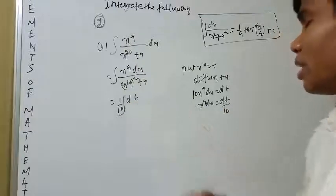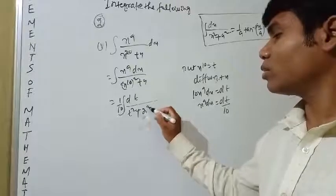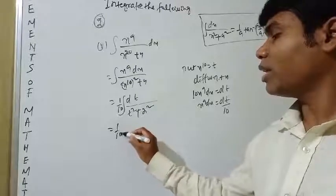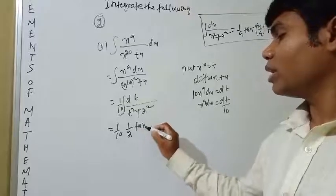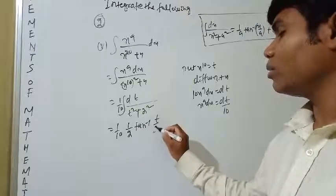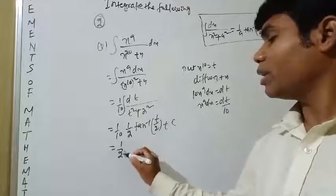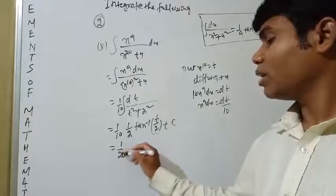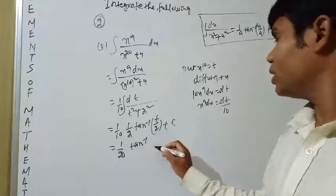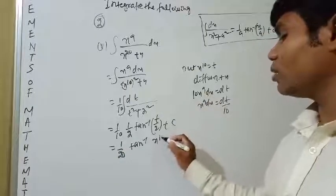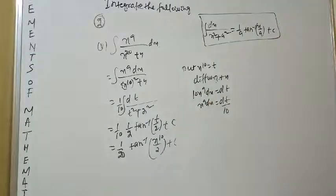Substituting x⁹ dx = dt/10, the integral becomes (1/10) ∫dt / (t² + 2²). Using the formula: (1/10) × (1/2) tan⁻¹(t/2) + c = (1/20) tan⁻¹(x¹⁰/2) + c. Post the video, note it down.